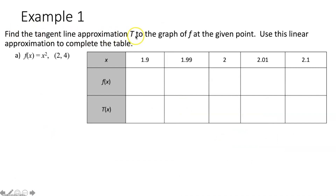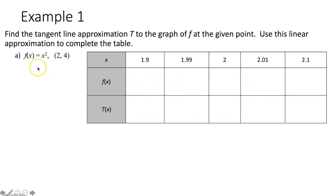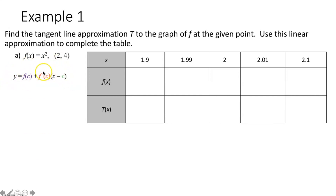Example 1: find the tangent line approximation t to the graph of f at the given point, and use this linear approximation to complete the table. We have a function and a point of tangency. We want to show how close the tangent line approximation gets to the actual function. Since we're given a function and a point initially, we'll use our tangent line approximation formula.